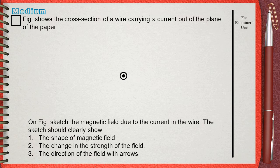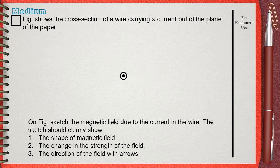A little different question about the magnetic fields of wires. Figure shows the cross-section of a wire carrying a current out of the plane of the paper. The circle you see now is the cross-section of a wire where the current is going out of the plane of the paper. On figure, sketch the magnetic field due to the current in the wire.